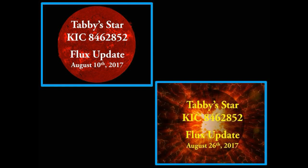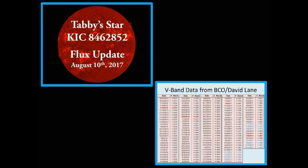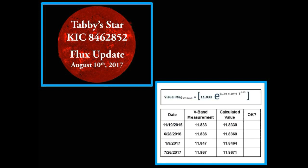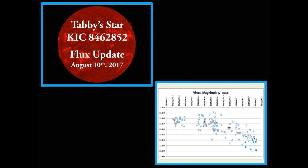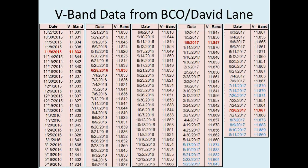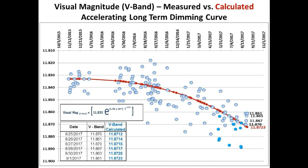Revisiting our second experiment — as you may recall in our video dated August 26th, we rolled out our accelerating long-term dimming equation based on a best-fit curve to V-band data measured by David Lane over a two-year period. We will update and track the equation with actual measured data once a month, either at the beginning or at the end of the month. Since this is the first of September and we have a week's worth of data, we will show you where we are with this equation currently. This is the graph that we will update once a month, showing the V-band measured data versus the calculated accelerating long-term dimming curve.